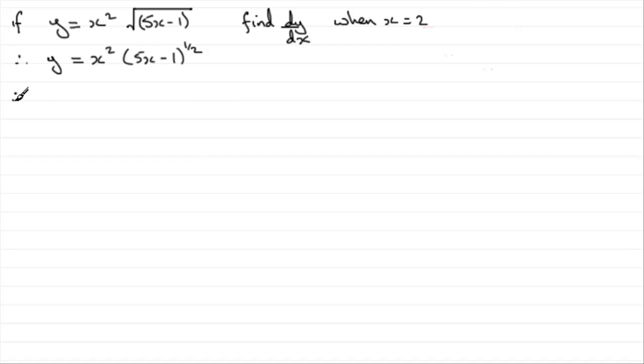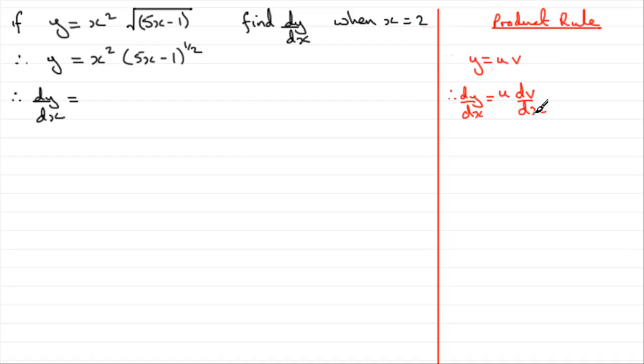Now to find dy by dx for something like this, what we've got is a product of two functions. So what we've got to do is use the product rule. I'll just remind you if you're unfamiliar with that, you can find some tutorials on my website. But briefly, if you've got two functions of x being multiplied together, u and v, it can be shown that dy by dx equals u times dv dx plus v times du dx. That's the product rule, and you'll generally find that in most formula books.